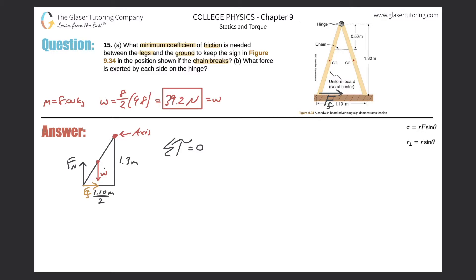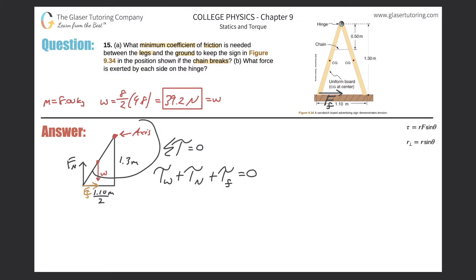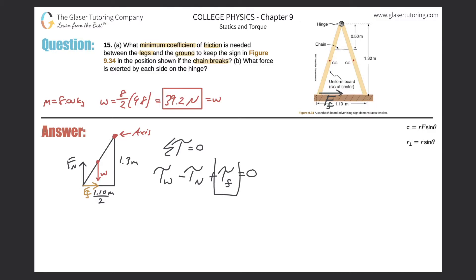The sum of the torques equals zero. There are three forces, so three torques: the torque due to the weight, the torque due to the normal force, and the torque due to friction. Always check the signs: the weight would rotate the bar counterclockwise — positive. The normal force would rotate it clockwise — negative. The frictional force would rotate it counterclockwise — positive. So: τ_W − τ_N + τ_f = 0.